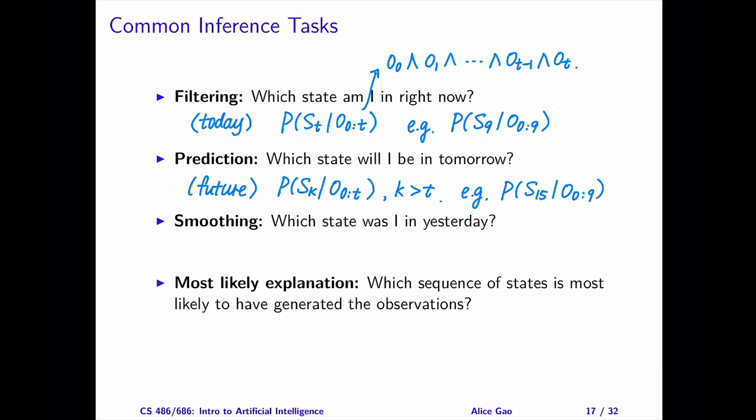Smoothing cares about a day in the past. Given the observations until today, what is the probability that I was in a particular state on a day in the past? Mathematically, given the observations from day 0 to day t, we want to calculate the posterior distribution over the state on day k, where k is at least 0 and less than t.